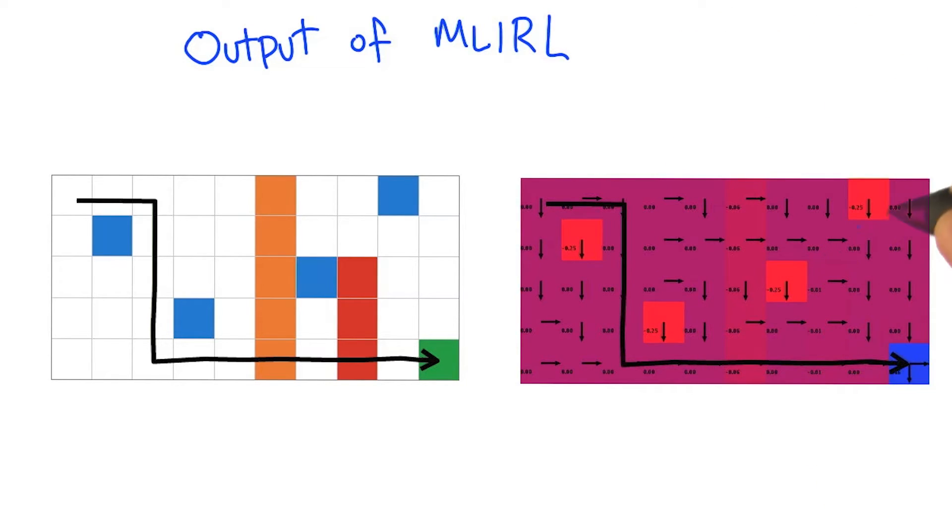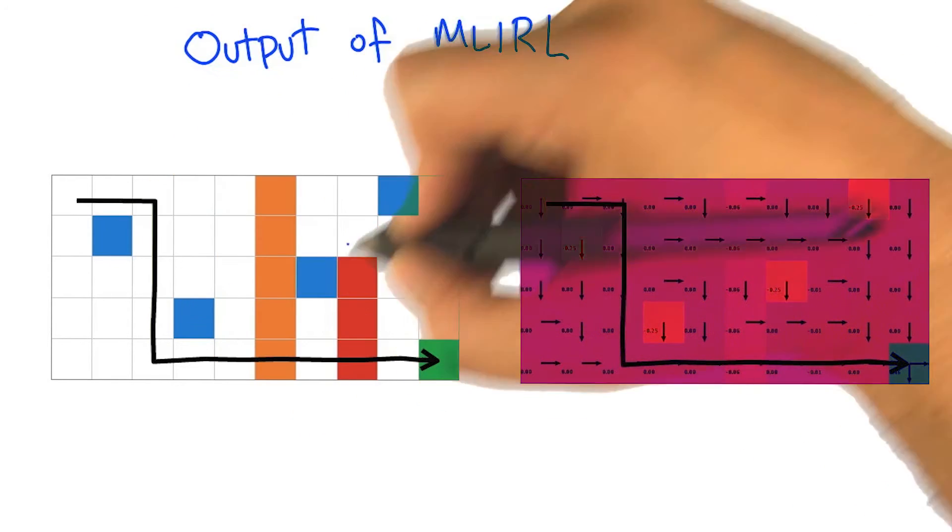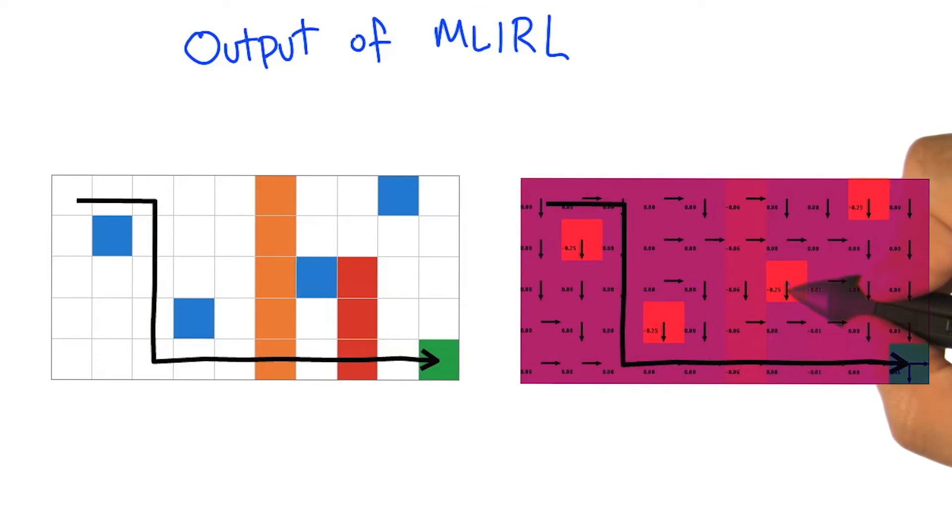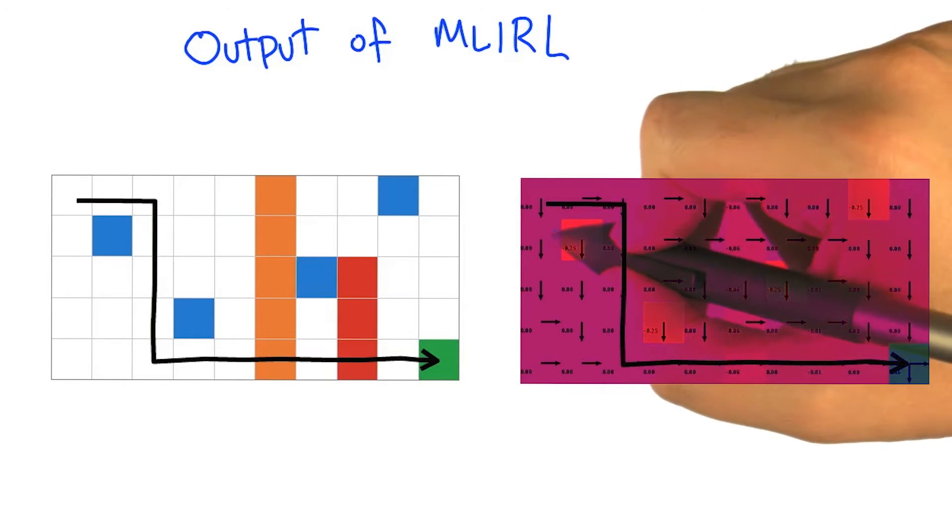And you can see that the blue squares are actually fairly negative. The ones that correspond to these blue puddles are given a not insignificant negative reward, so they are actually avoided on purpose.